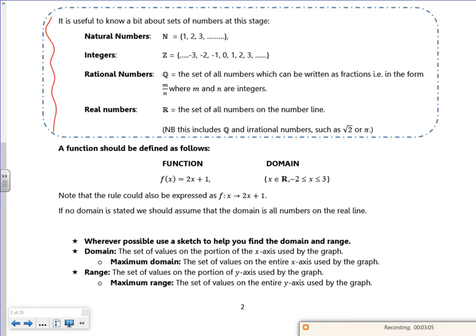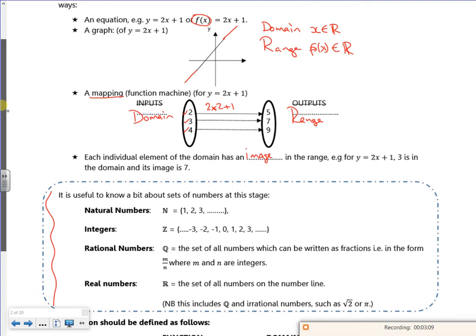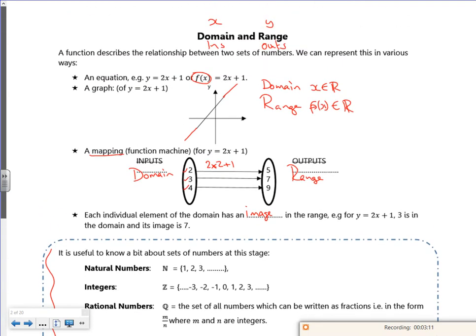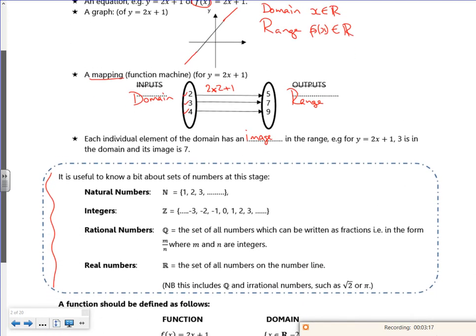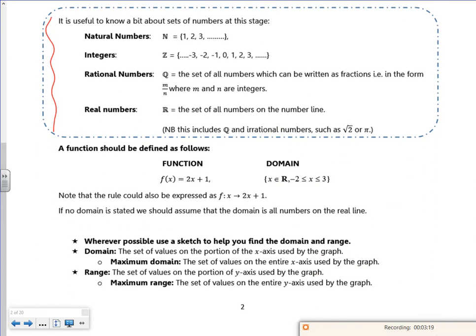When I did it up here I said the line goes on forever, so my domain is any numbers and the range will cover any numbers, any real numbers. But this here is restricted to certain values.